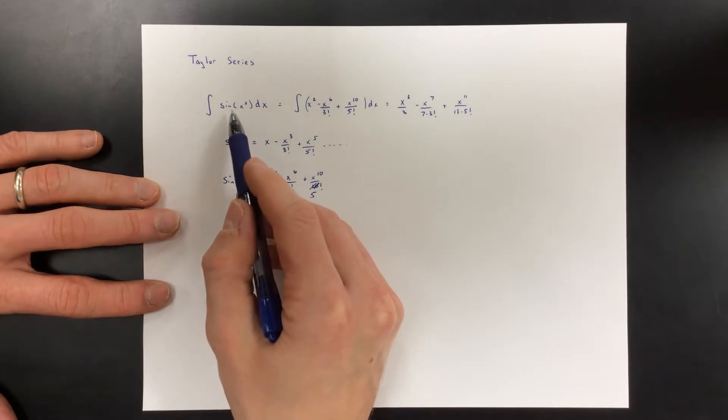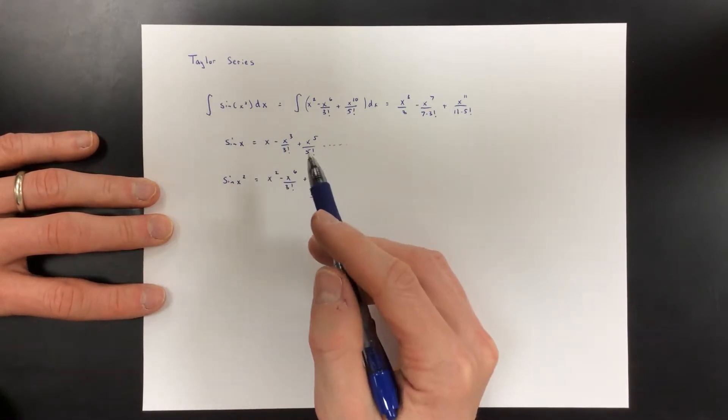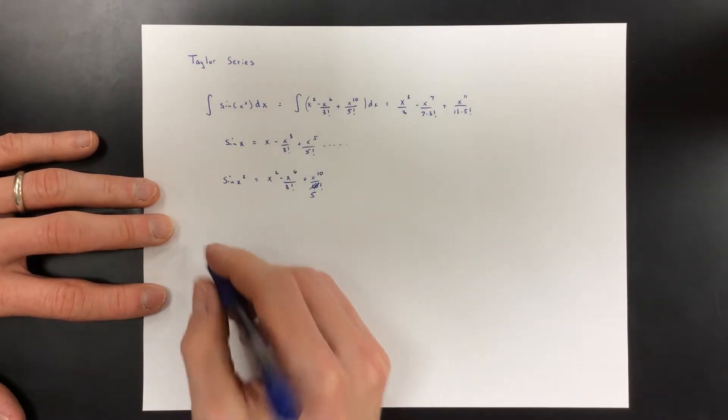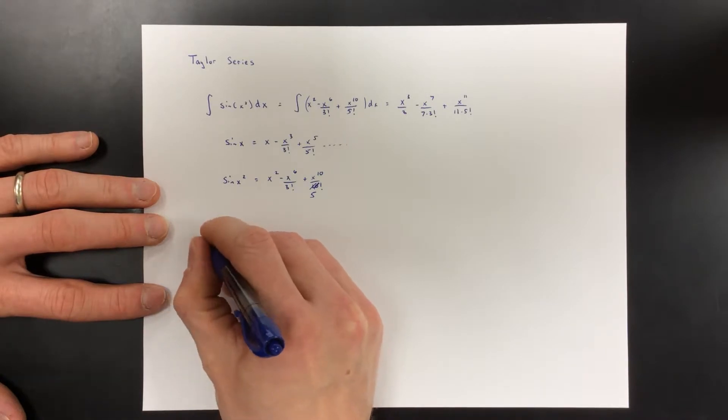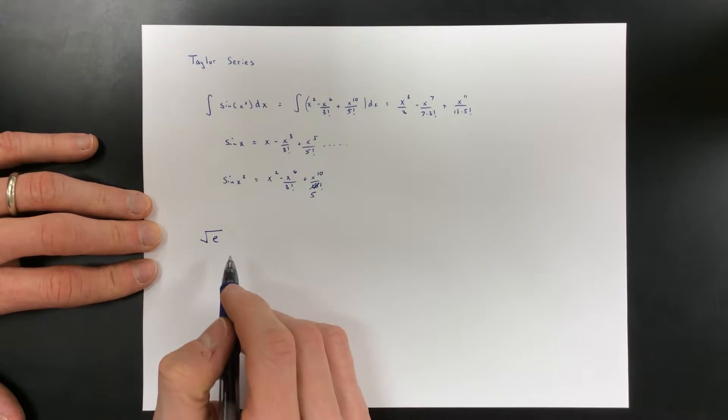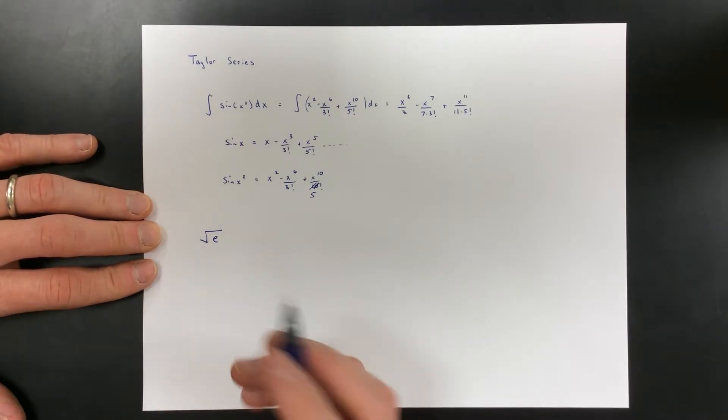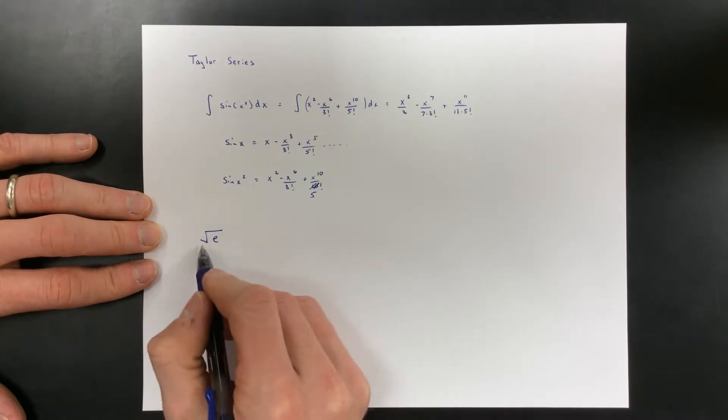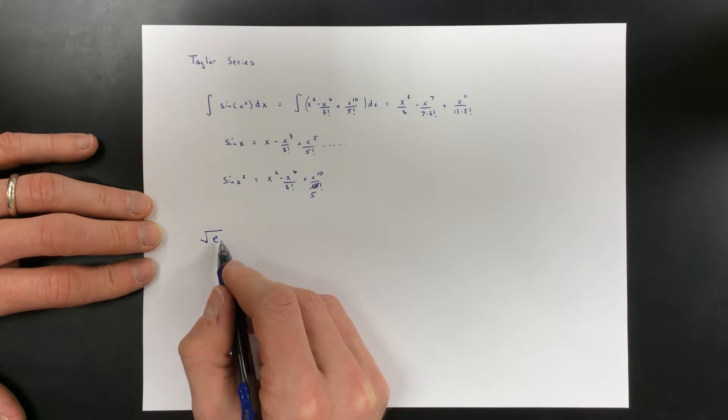A very similar situation: how in the world were we going to evaluate the square root of e? Square roots themselves are pretty difficult to evaluate by hand. What's the square root of five, how would you figure it out? But this is the square root of e, we're taking the square root of an irrational number, meaning a number that we can't even express as a decimal.